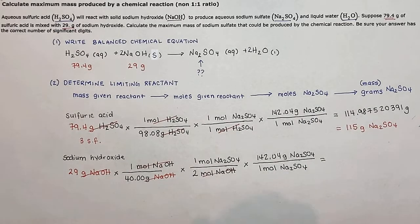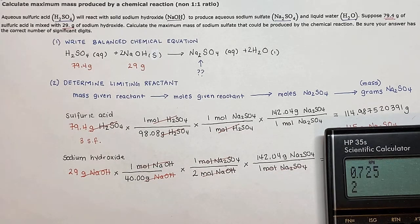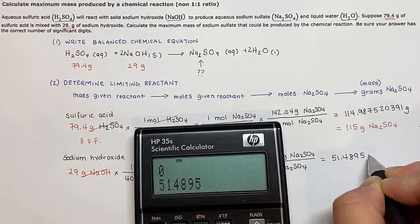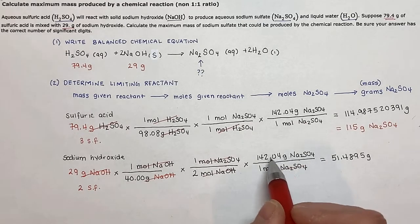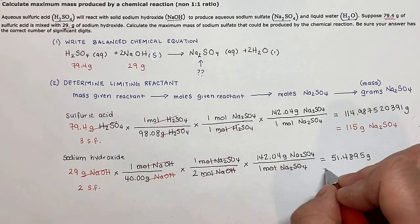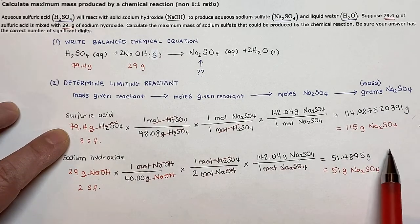After canceling units and calculating: 29 divided by 40, multiplied by 1 over 2 (the mole ratio), then multiplied by the molar mass of sodium sulfate, gives 51.4895. Considering significant figures — 29 grams has two sig figs, the molar masses have four and five sig figs — this rounds to 51 grams of Na₂SO₄.